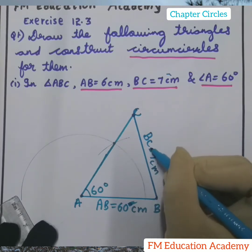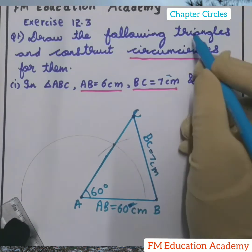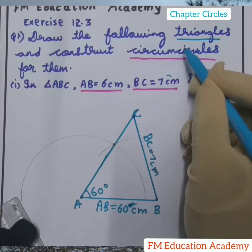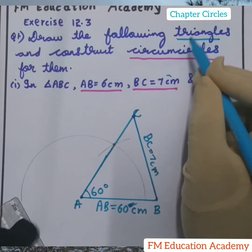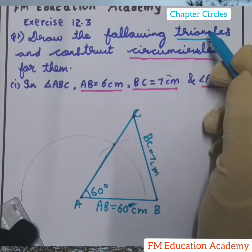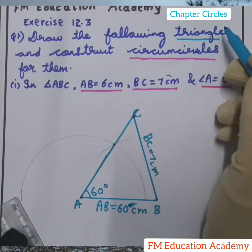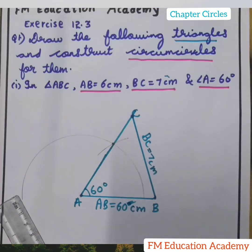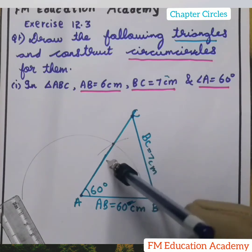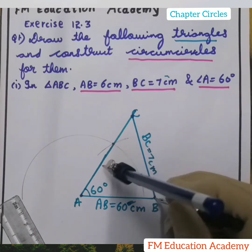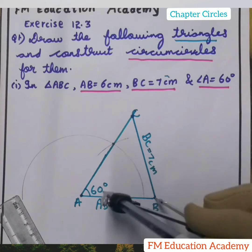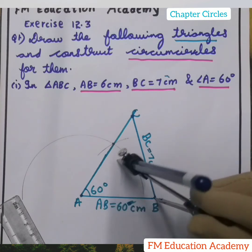Now a triangle is made, but we have to make a circumcircle. A circumcircle is a circle which has a triangle inside it. To draw it, take the compass and draw the perpendicular bisector of AB. Take a radius more than half of AB.